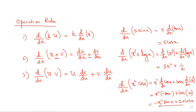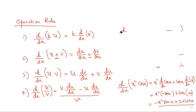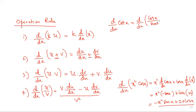Fourth rule: derivative of u/v. Start from the denominator — denominator times derivative of numerator, minus numerator times derivative of denominator, all divided by the square of the denominator. For example, derivative of sin(x)/cos(x) — but let's find the derivative of cot(x), which is cos(x)/sin(x), so we must use the fourth rule.